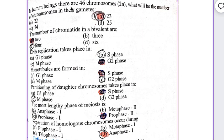In human beings there are 46 chromosomes. What will be the number of chromosomes in their gametes? B, 23.